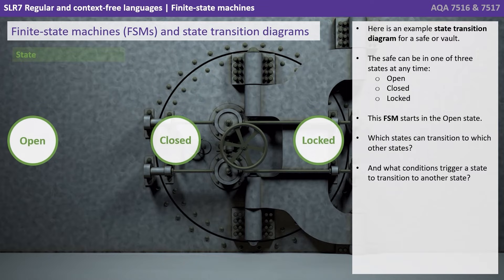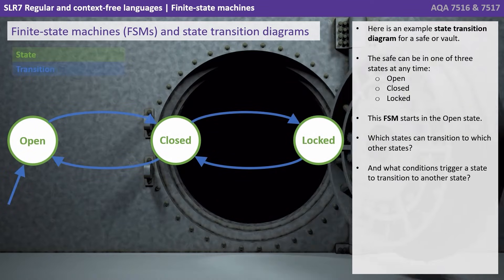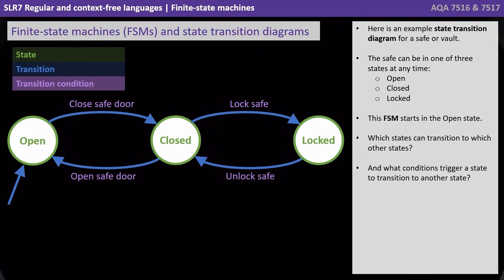Here is an example state transition diagram for a safe or vault. The safe can be in one of three states at any time: open, closed or locked. This finite state machine starts in the open state. Which states can transition to each other, and what conditions trigger a state to transition to another state? It should be fairly obvious by looking at the diagram.